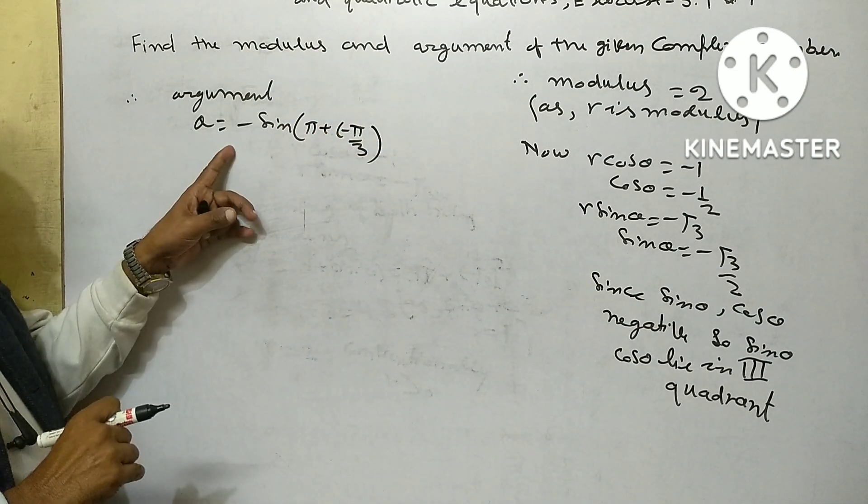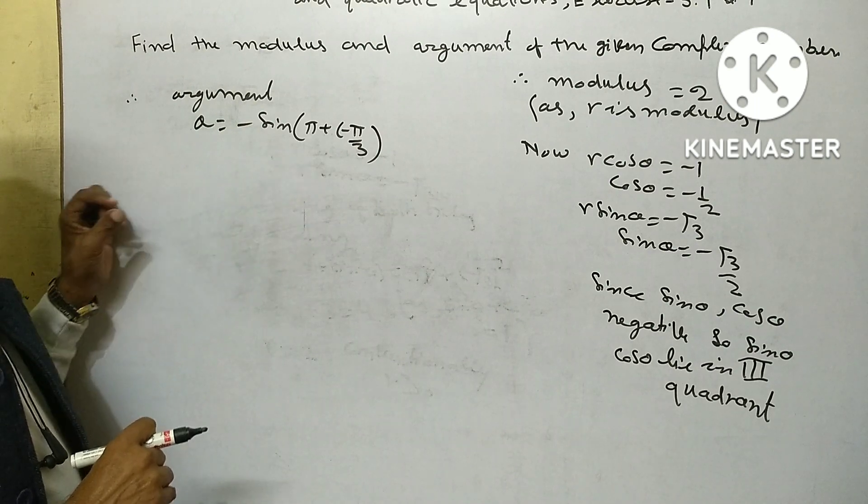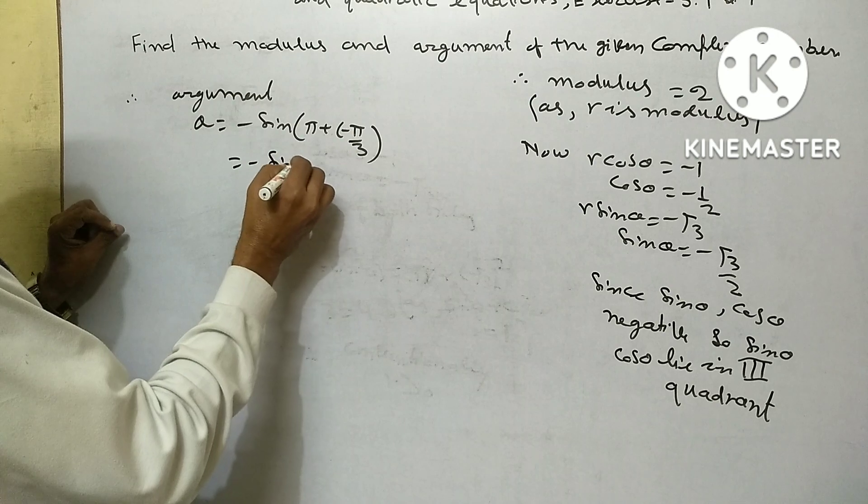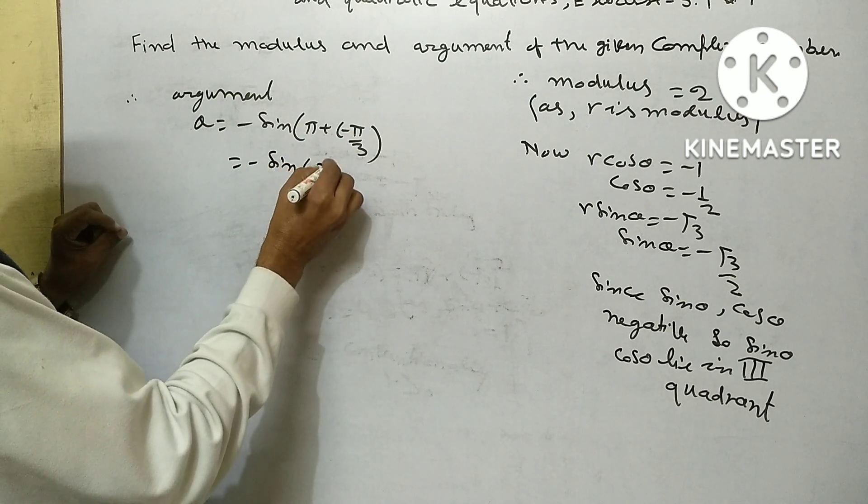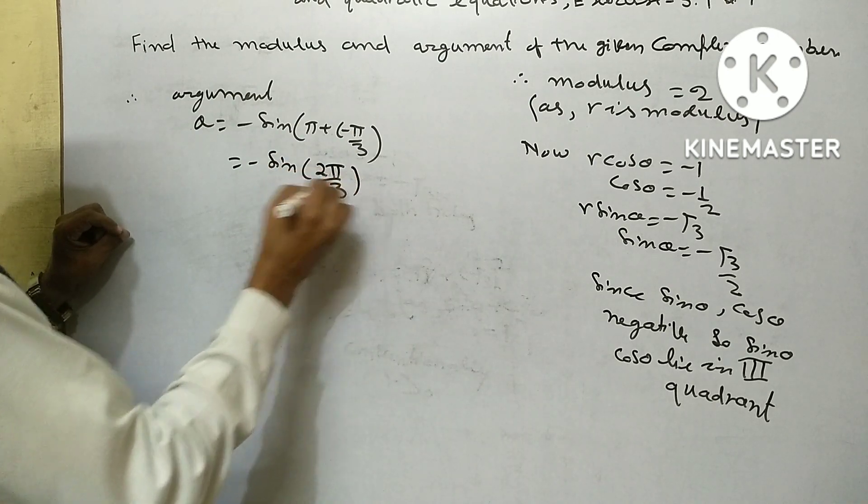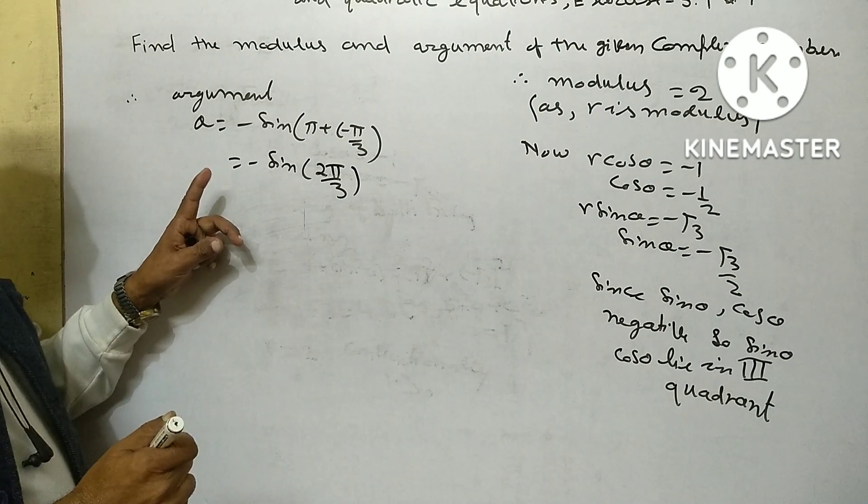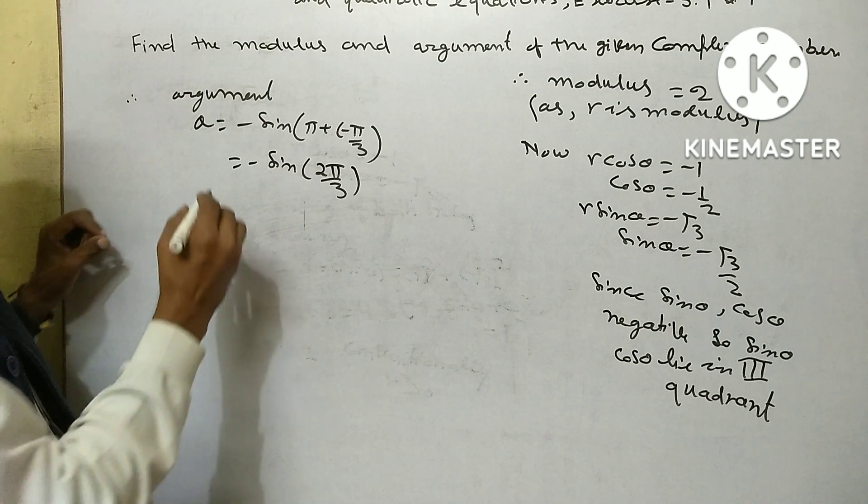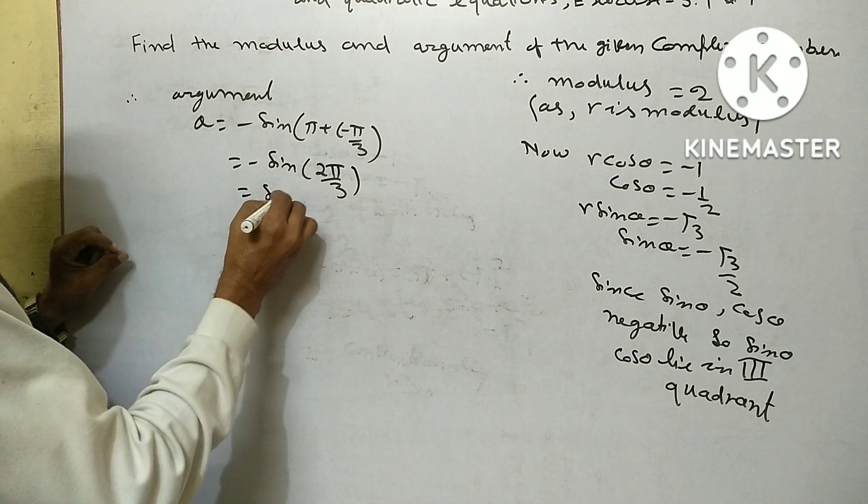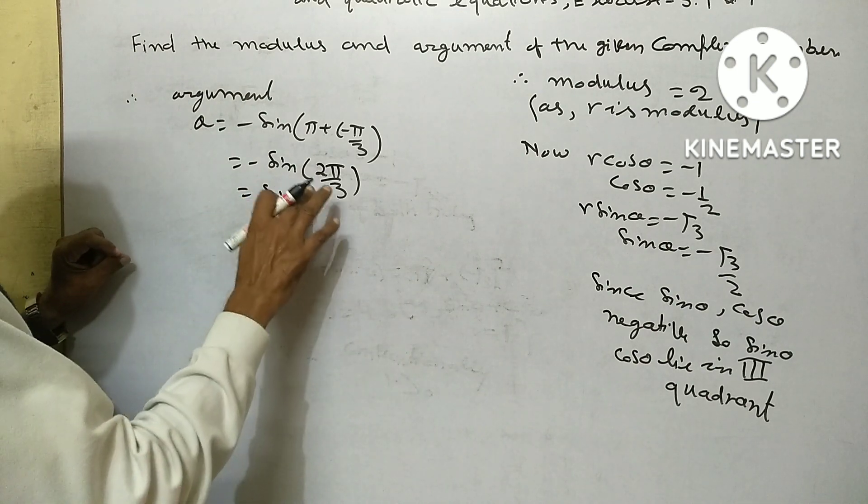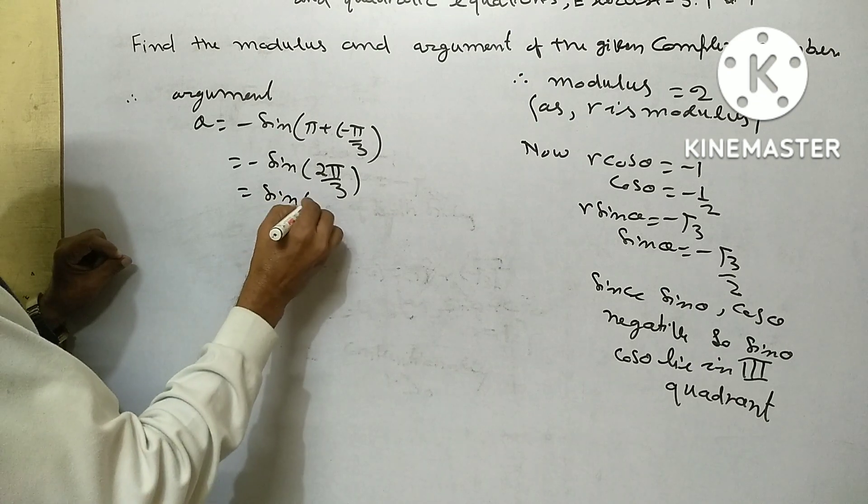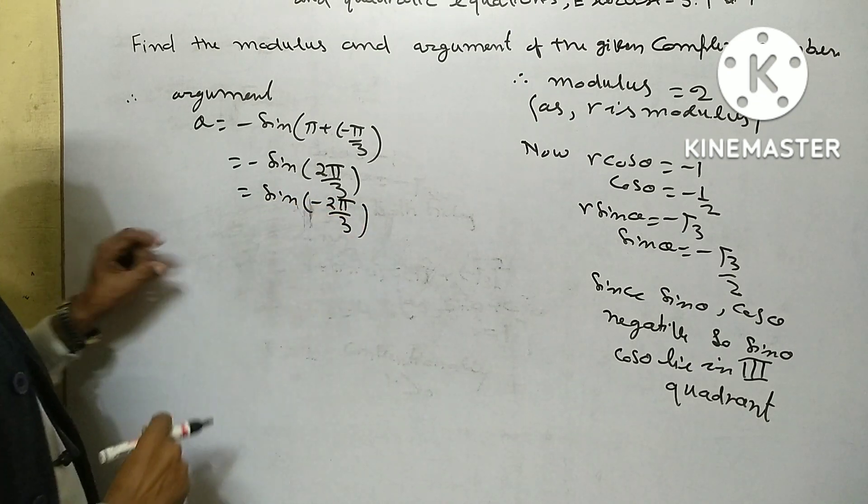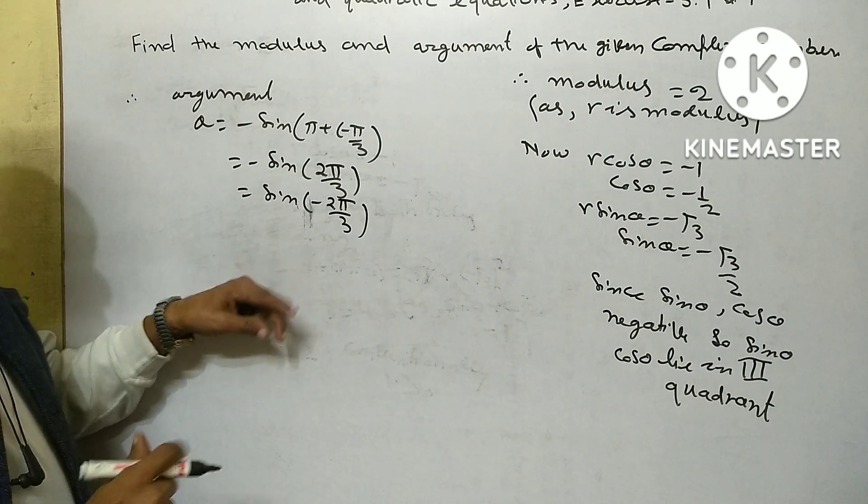Theta equal minus pi plus minus pi by 3, so theta equal minus 2 pi upon 3, and this equals minus 2 pi upon 3.